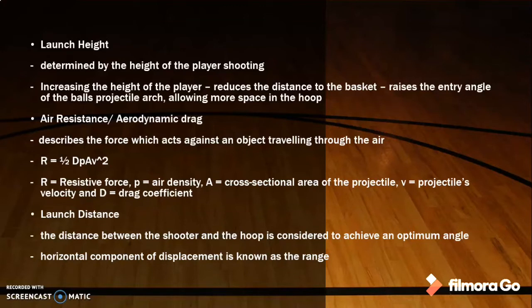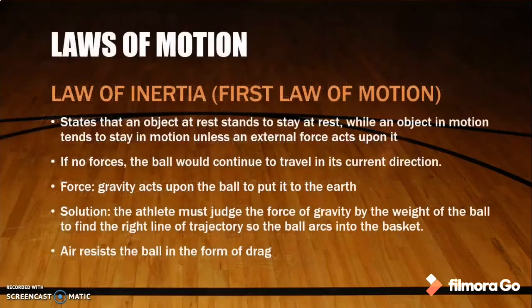Fifth, launch distance. The distance between the shooter and the hoop is important to consider in order to achieve an optimal angle. This horizontal component of the placement is known as the range. Next, we move to the laws of motion.